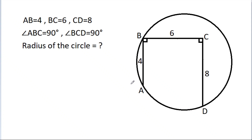In this video, we have given that AB is 4, BC is 6, and CD is 8, and angle ABC is 90 degrees, angle BCD is 90 degrees. We have to find the radius of the circle.